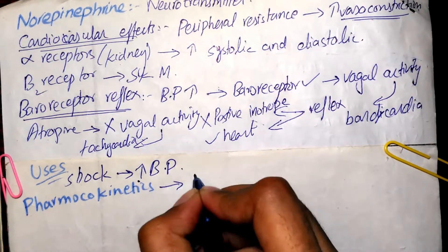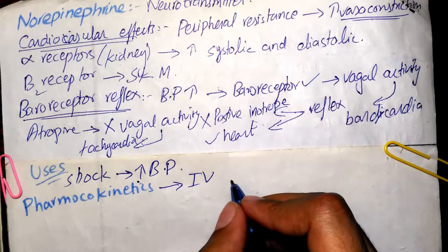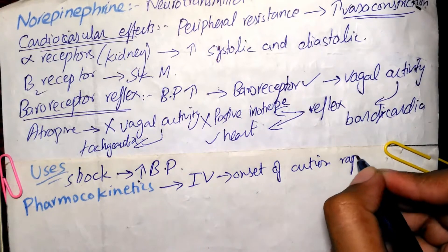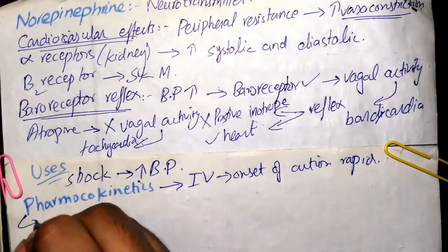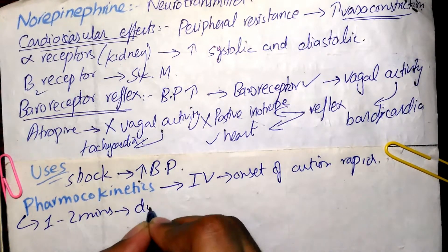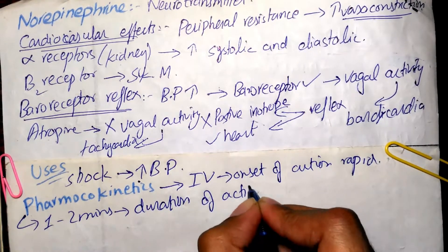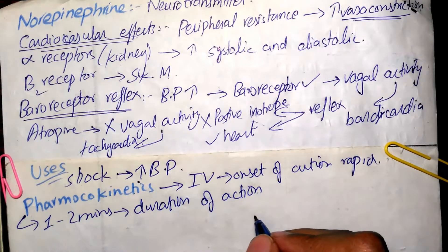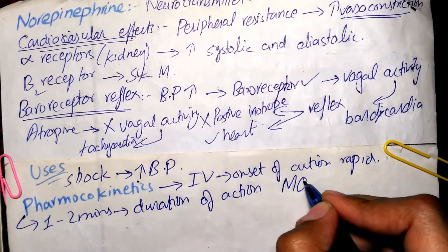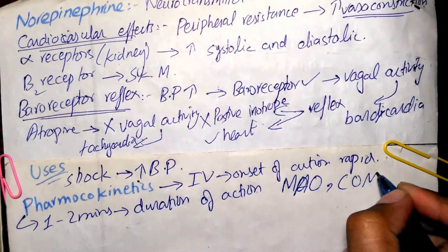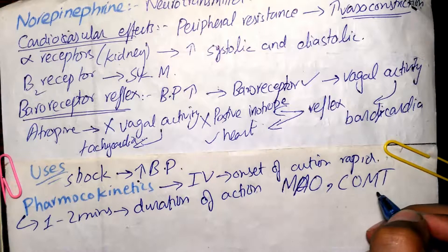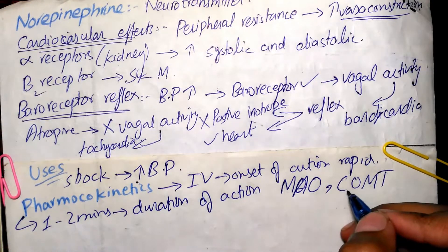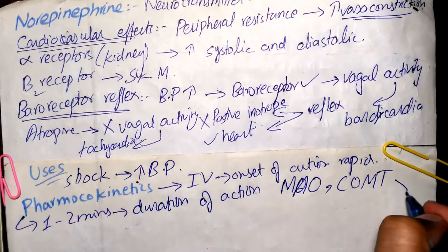Norepinephrine is given through the IV route for rapid onset of action, but its duration of action is only one to two minutes — a very short duration. This is because norepinephrine is rapidly degraded into its metabolites by the action of MAO (monoamine oxidase) and COMT (catechol-O-methyltransferase), and these metabolites are secreted through urine.